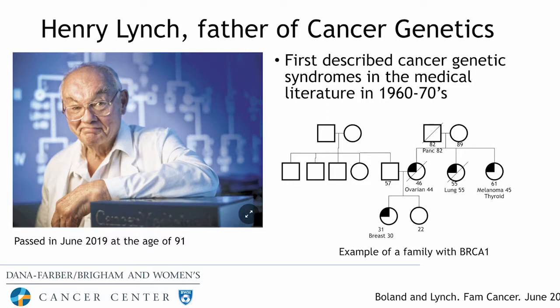Clinical cancer genetics is a relatively young field. Hereditary cancer syndromes were probably first described in 1895 by Dr. Worthen at the University of Michigan. However, it wasn't until the 1960s and 1970s that Henry Lynch, a physician, really described the first cancer genetic syndromes in the medical literature. He also established the family tree as a clinical tool. In family pedigrees, circles represent women, squares represent men, and there's notation indicating when people are diagnosed with cancer, what type of cancer, and at what age.